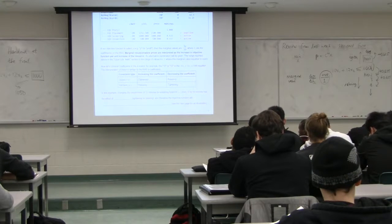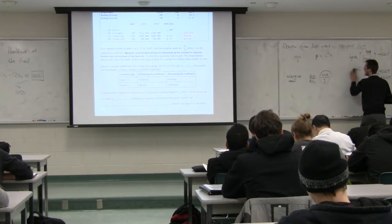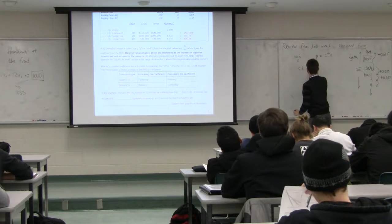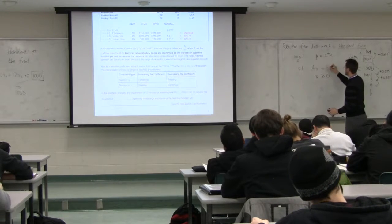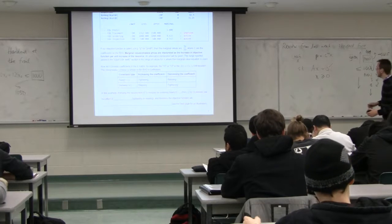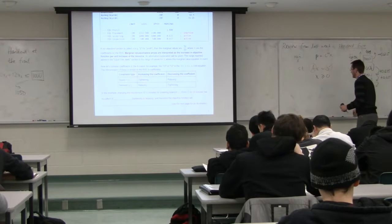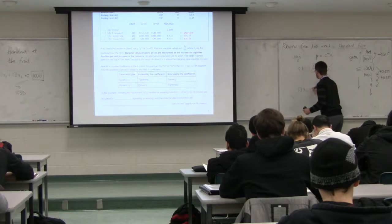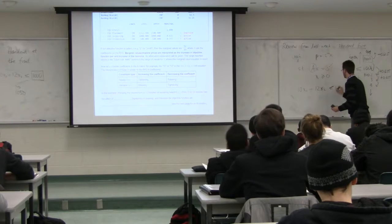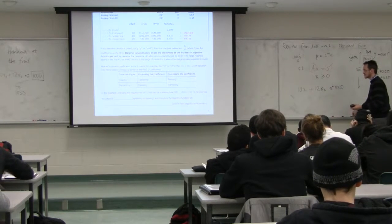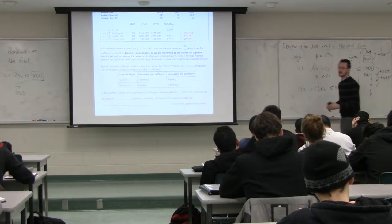Now let's move on to understand not only changes in b but also changes in the matrix a. Back to standard form: subject to ax equals b and non-negativity, we've now looked at changes in b — what about changes in matrix coefficients in a? Back to the soldering constraint: 10x1 plus 12x2 less than or equal to 1000. What I'm referring to now is what happens if we vary that value of 12, or that value of 10.